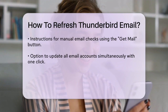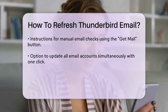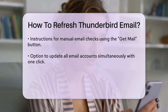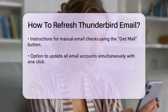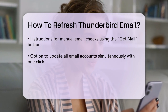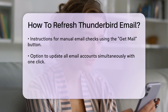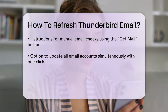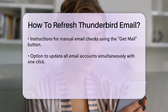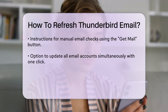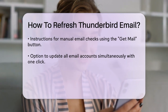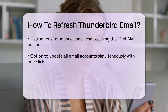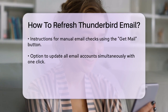Now let's talk about how to manually check for new emails. There are a few ways to do this. If you want to update all your email accounts at once, simply click the Get Mail button in the main Thunderbird window. If you only want to update a specific account, click the arrow to the right of the Get Mail button and select the account you want to update.